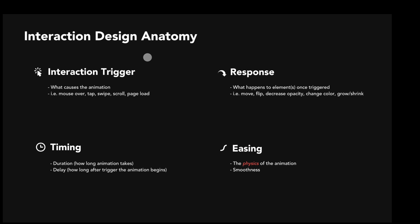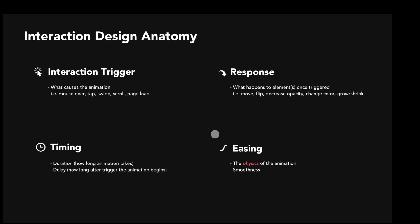Now let's talk about the anatomy of an interaction. All interactions have four main parts: a trigger, a response, timing, and easing. The trigger is what causes the animation — whether that's a mouse over, tap, swipe, scroll, or even page load. The response is what actually happens to the element once triggered: does it move, flip, decrease in opacity, change color, grow, or shrink? Then we have timing, comprised of duration and delay. Duration is how long the animation takes, and delay is how long after the trigger the animation begins. Then we get into easing — pretty much the physics of the animation — which helps our digital products replicate the real world.